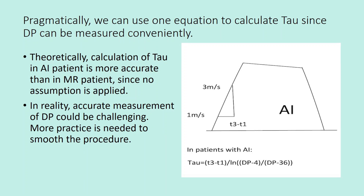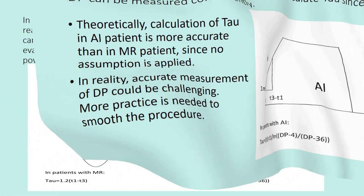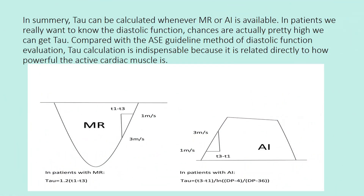In reality, accurate measurement of DP can be challenging, and more practice is needed to smooth the procedure. In summary, tau can be calculated whenever mitral regurgitation or aortic regurgitation is available. In patients where we really want to know the diastolic function, the chances of obtaining tau are actually pretty high.